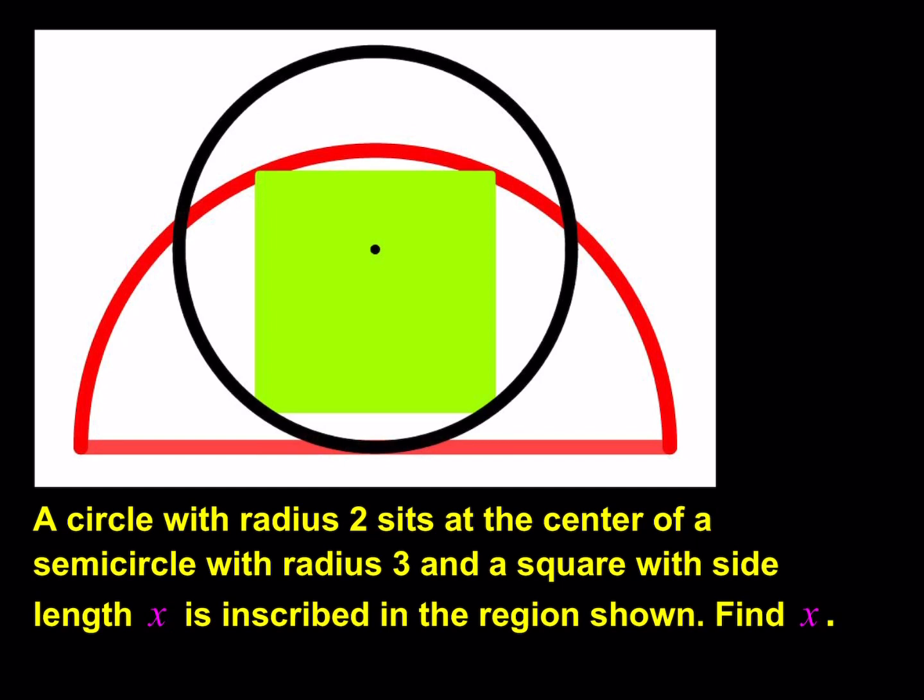Alright, without further ado, let's get started. So we do have a circle with radius 2 that sits at the center of a semicircle with radius 3, and then a square as you see the green one with side length x is inscribed in the region shown where we're supposed to find the side length of the square.